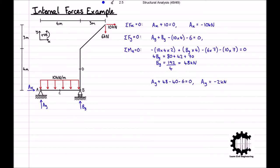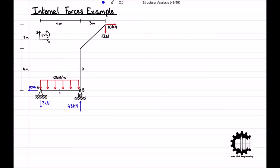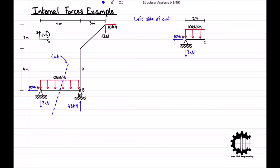Having calculated the reaction forces, we'll add them to the diagram. At point A, there is a horizontal reaction force of 10 kN acting in the left direction and a vertical reaction force of 2 kN acting downwards. At point B, there is a vertical reaction force of 48 kN acting upwards. We can now calculate the internal forces at points C and D, starting with point C. We will cut bar AB in half, considering the left side. Doing this, we have a bar 2 meters in length, supported by the hinge support at point A, ending at point C, with the loads applied to this section as illustrated in the diagram.